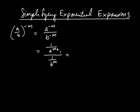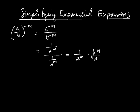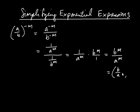Now I have one fraction divided by another. The way we do that is we keep this fraction the same — the 1 over a to the m — but we multiply by the reciprocal of the other fraction. Whenever you divide by a fraction, you multiply by its reciprocal. So the reciprocal of 1 over b to the m is b to the m over 1. Multiplying these together gives b to the m over a to the m, which I can write as b divided by a, raised to the m.